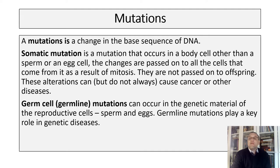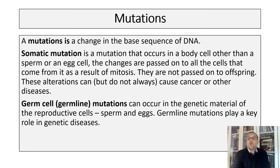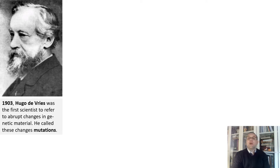Mutations are usually classified into two categories: chromosomal mutations and gene mutations. If the structure of a chromosome or the number of chromosomes is changed, it is called a chromosomal mutation. Chromosomal mutations can cause changes in the cell and the whole organism. Gene mutations occur in individual genes and involve changes in the DNA. If the order of bases in a DNA strand is changed, the gene may now code for a different protein. Hugo de Vries in 1903 was the first scientist to refer to abrupt changes in genetic material as mutations, calling these new forms mutants.